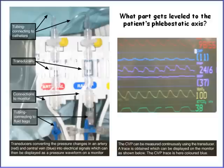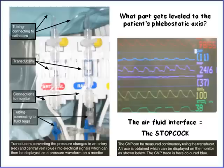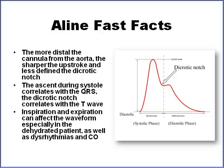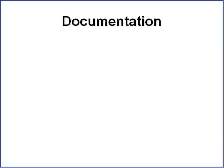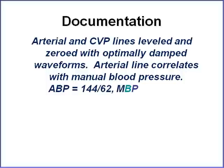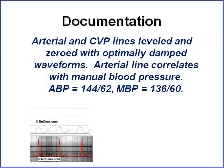What part of the pressure tubing gets leveled to the phlebostatic axis? The stopcock — not the transducer. Turn the toggle off to the patient, take the cap off, open to air, then hit zero on the monitor. Some fast facts about arterial lines: the more distal the cannula is from the aorta, the sharper the upstroke — a femoral arterial line will look a little more peaked. Inspiration and expiration can also affect your waveforms, so measure at end expiration just as you did with CVP. Document that you've leveled and zeroed, have optimally damped waveforms, that your art line correlates with manual blood pressure, and print and interpret your strips as part of the chart.